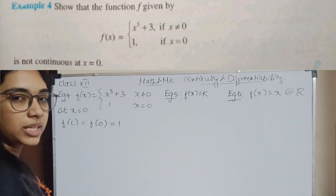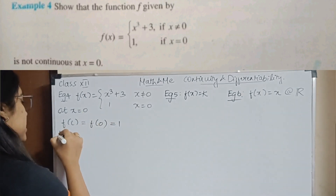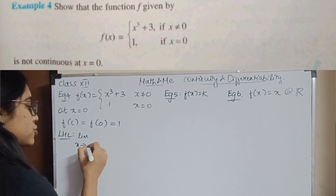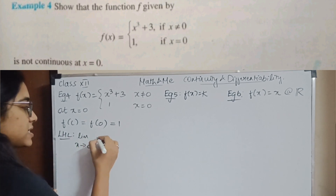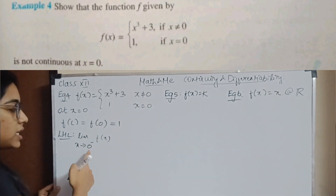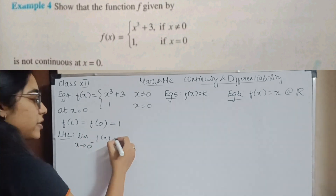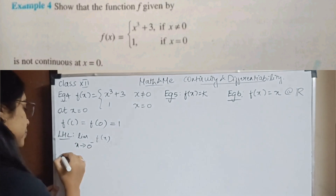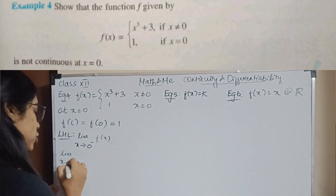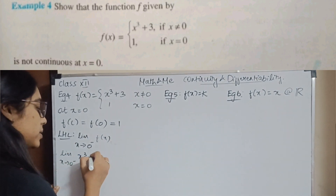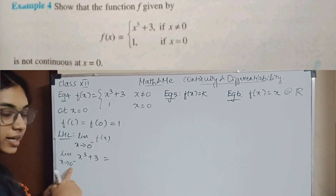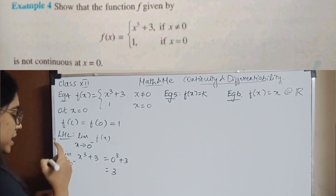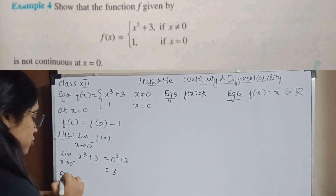Now we check the left hand limit and right hand limit. The left hand limit as x tends to 0⁻ of f(x): since x ≠ 0, we use f(x) = x³ + 3. Substituting 0, we get 0³ + 3 = 3. So the left hand limit is 3.